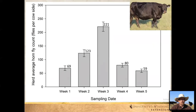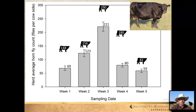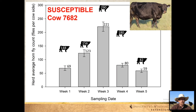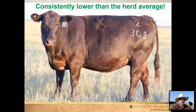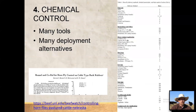Now here's cow 7682 — looking at each weekly count, she had about twice the amount of flies as the herd average in week one, and was consistently higher than the herd average every week. She might be a cow we'd say is susceptible for whatever reason. Maybe if we're making culling decisions, this might be a cow we ship while we retain the consistently lower-than-average cow. She probably has some hide and coat features playing into this, but this is something you can observe through time — and producers have certainly seen this in their own operations.